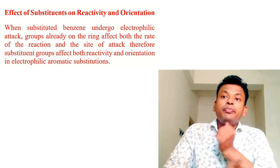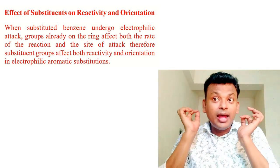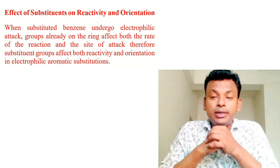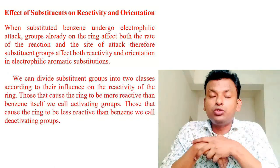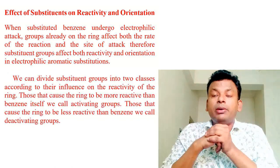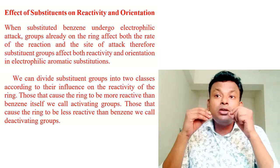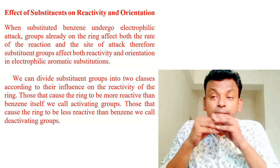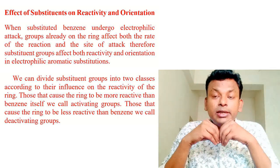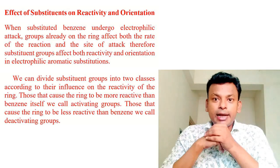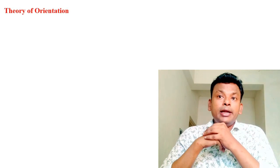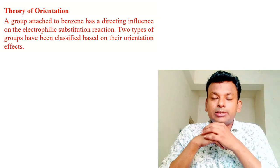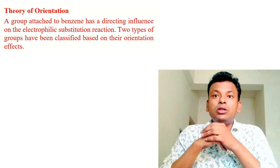Orientation means the relative position of the second substituent with respect to the first substituent already in the ring. When a substituted benzene undergoes electrophilic attack, the group already on the ring affects both the rate of reaction and the site of attack. Substituents affect both reactivity and orientation in EAS. Substituent groups can be divided into two classes: those that make the ring more reactive than benzene — activating groups — and those that make the ring less reactive — deactivating groups.